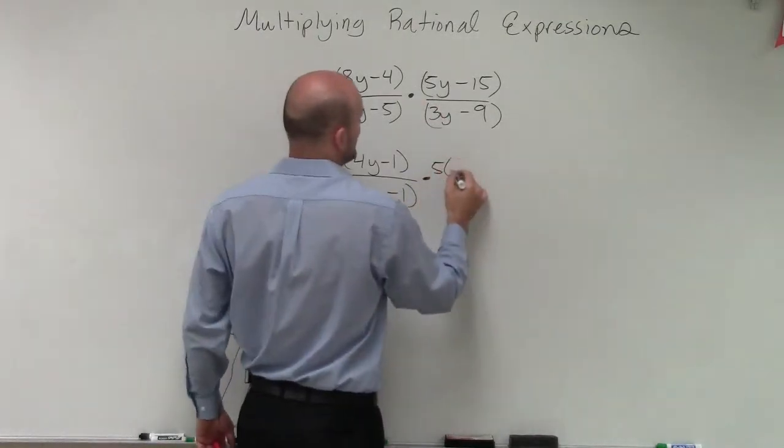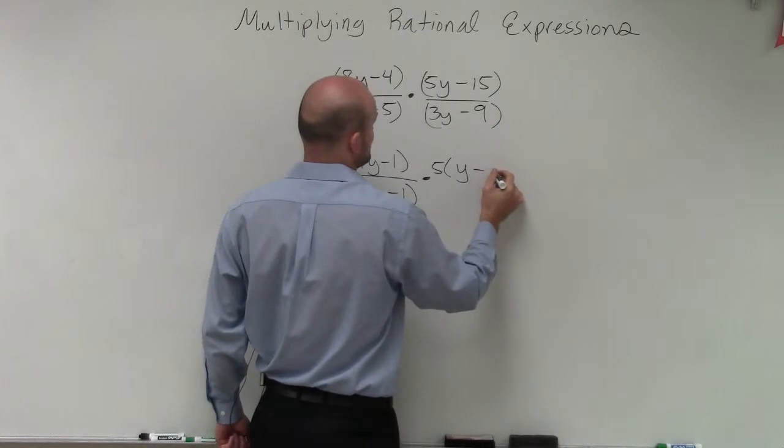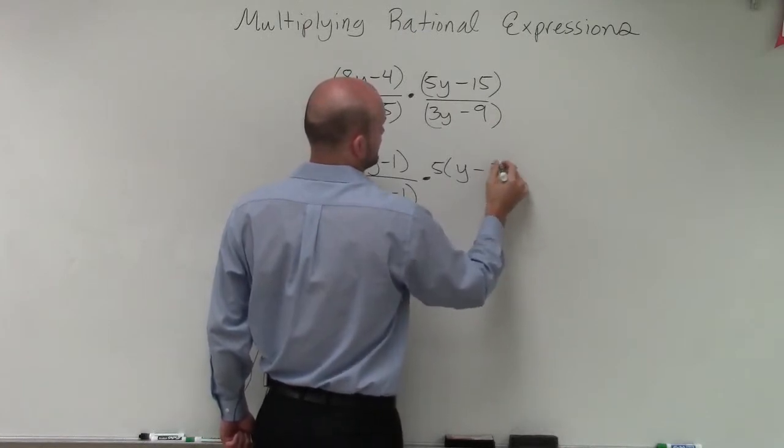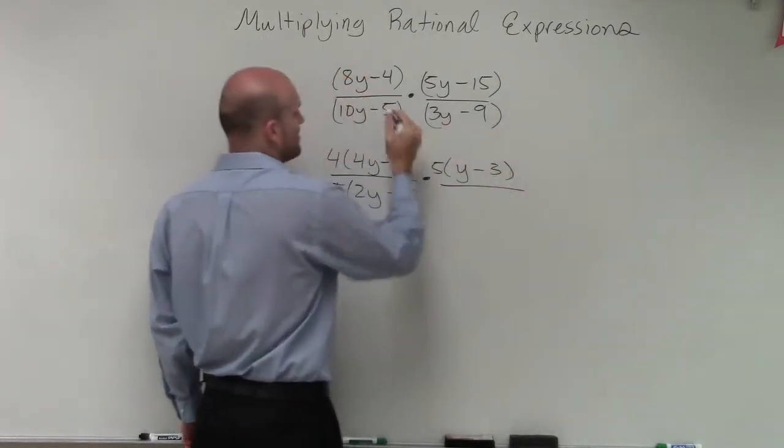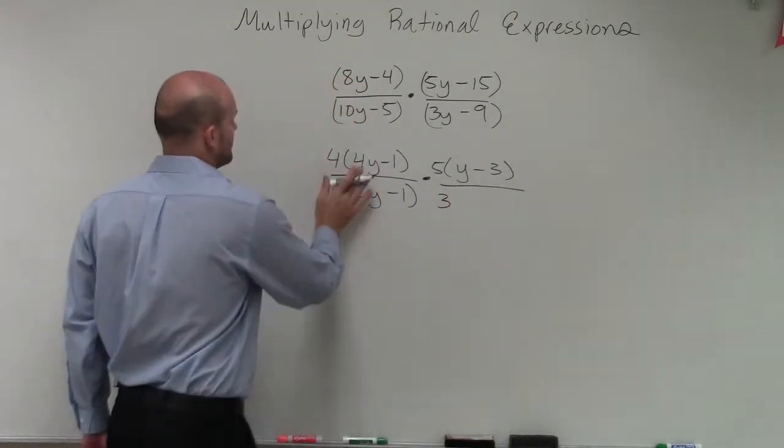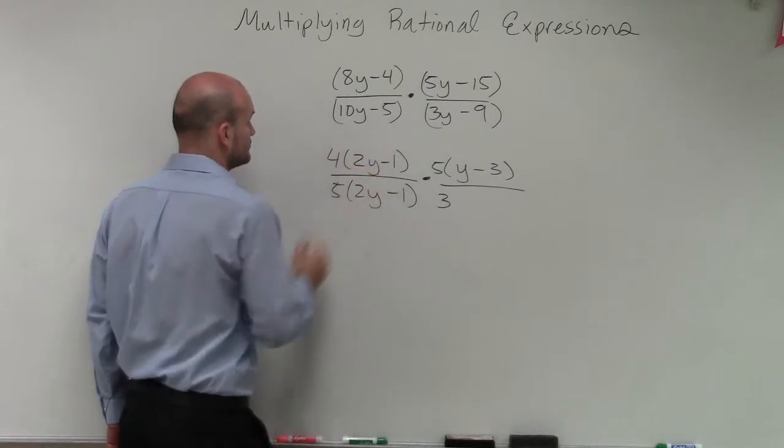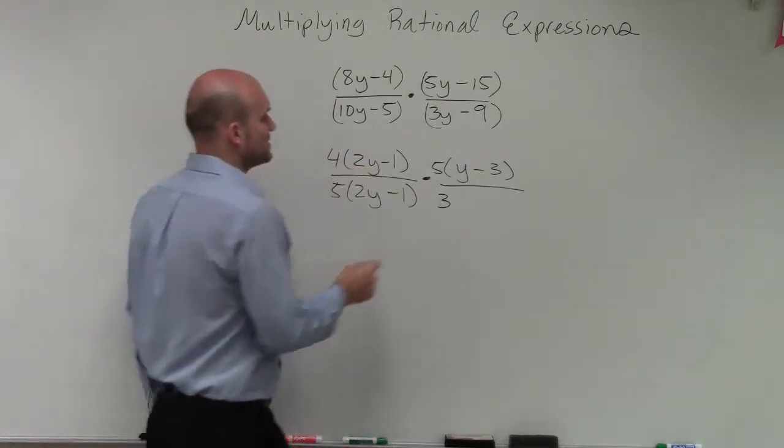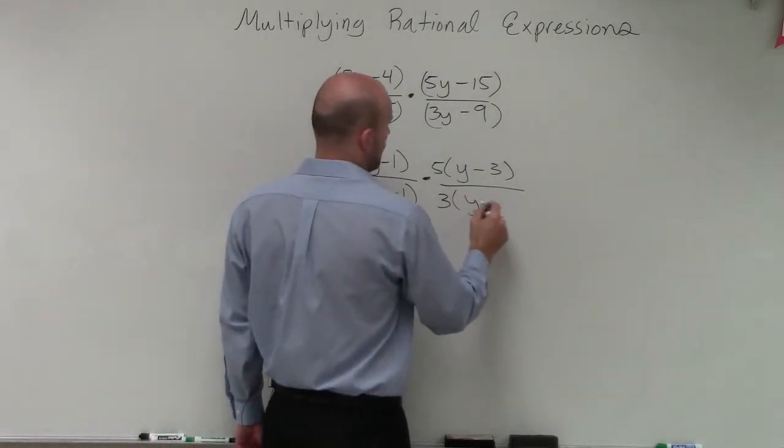Times over here, if I factor out a 5, I'm left with a y minus 3. And over here, if I multiply by or factor out a 3. Oh, I'm sorry. That's a 2y. Right? If I factor out a 3, I'm left with a y minus 3.